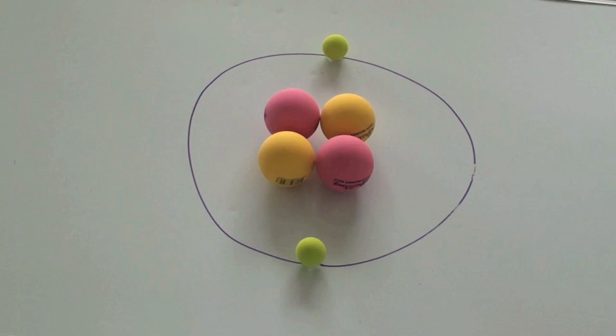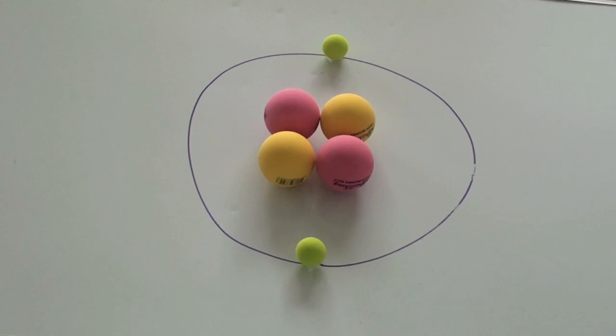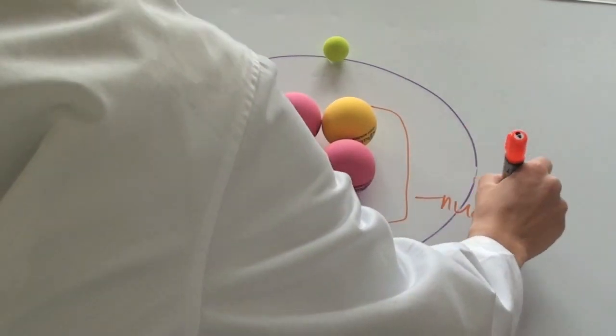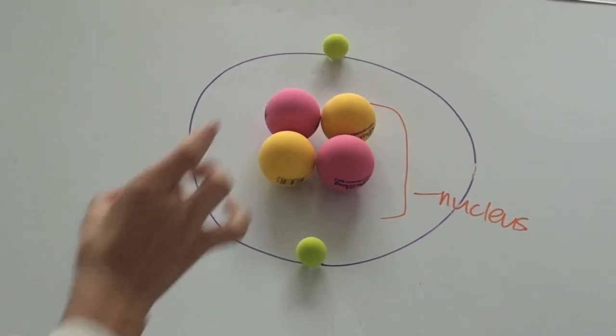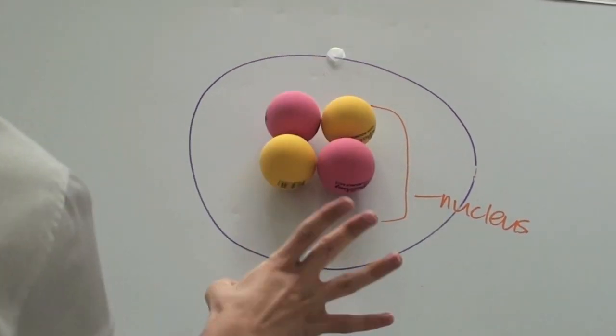This is an atom. It consists of protons and neutrons, except hydrogen, which live in the nucleus, and the electrons which exist around it. And this is a nucleus. For now, forget about the atomic electrons.